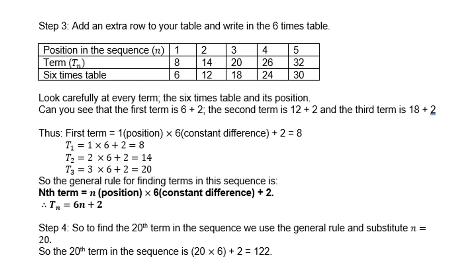Look carefully at every term and its position in the 6 times table. The first term is 6 plus 2; the second term is 12 plus 2; the third term is 18 plus 2. Thus, term 1 is 1 (the position) times 6 (the constant difference) plus 2. Term 2 is 2 times 6 plus 2. Term 3 is 3 times 6 plus 2. So the general rule is: the nth term equals n times 6 plus 2, giving the formula tn = 6n + 2.